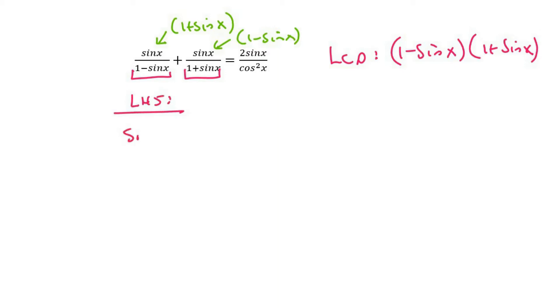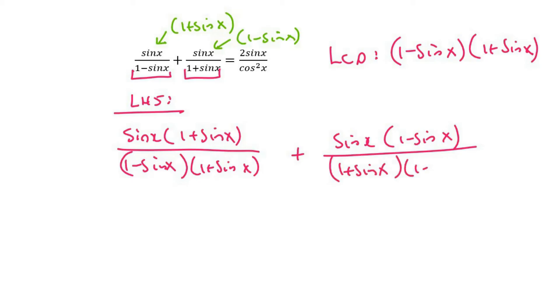And so that's going to give us sine x multiplied by 1 plus sine x over 1 minus sine x, 1 plus sine x plus sine x multiplied by 1 minus sine x over 1 plus sine x multiplied by 1 minus sine x. Okay, so there we go.